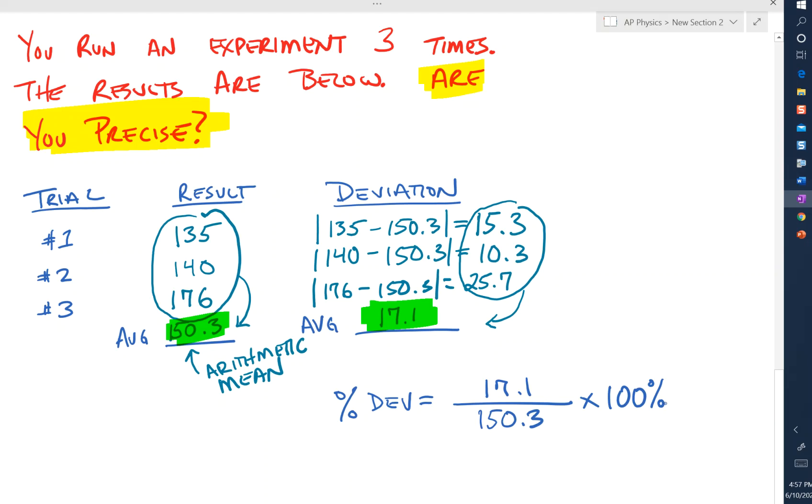Let's see what we got. 17.3 divided by 150... sorry, 17.1 divided by 150.3 times 100. And my percent deviation is equal to 11.4.